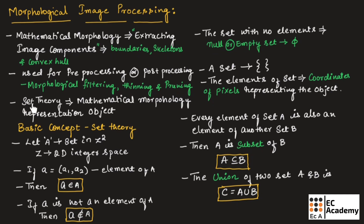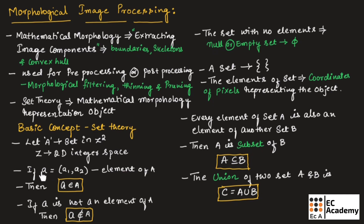The language of mathematical morphology is set theory, which is used for representing objects in a digital image. Let us consider A to be a set in Z², where Z is two-dimensional integer space. If we consider a = (a1, a2) as an element, then we can write a belongs to capital A.